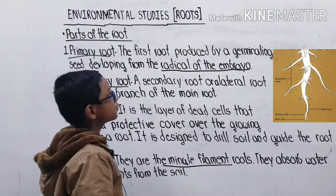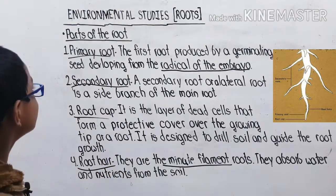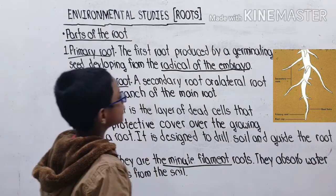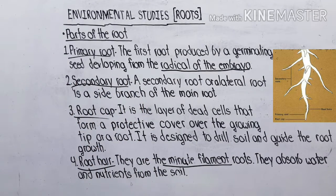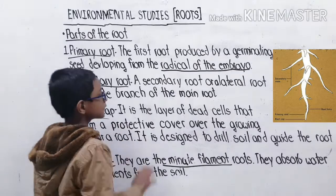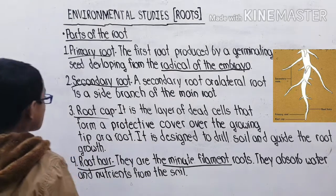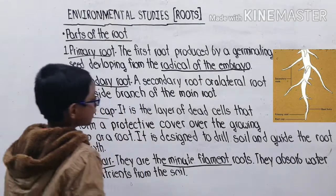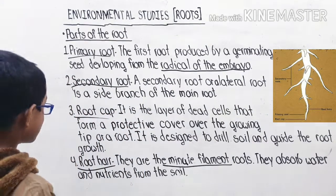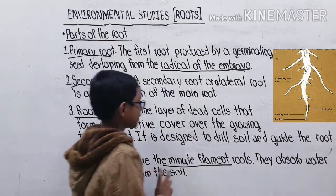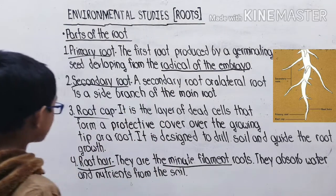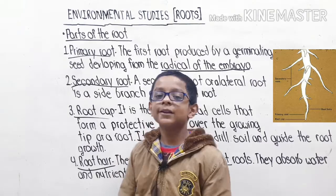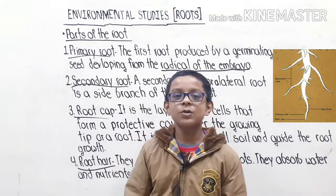So to recap: primary root is the first root produced by a germinating seed, developing from the radical of the embryo. Secondary root is a lateral root, a side branch of the main root. Root cap is the layer of dead cells that forms a protective cover over the growing tip of the root, designed to drill soil and guide root growth. Root hair are the minute filament roots that absorb water and nutrients from the soil.